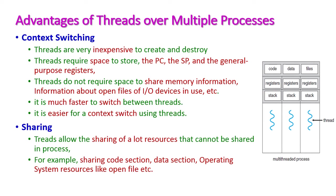First, let us see the advantage of threads over multiple processes. There are two advantages: context switching and sharing. When it comes to context switching, threads are very inexpensive to create and destroy — creating and destroying a thread is very easy when compared to processes.